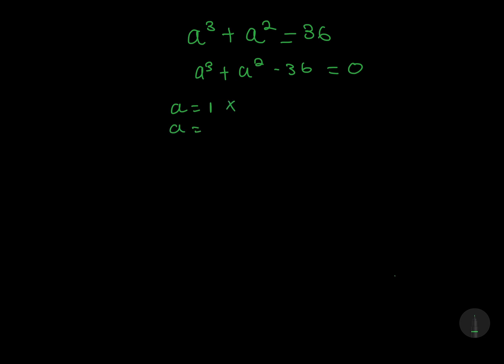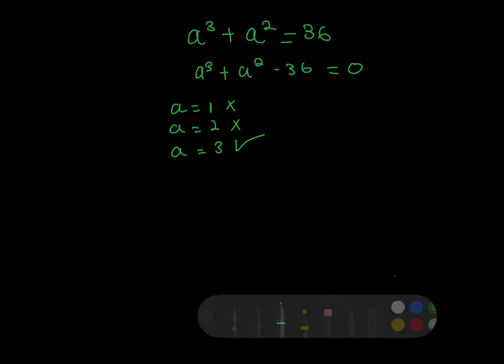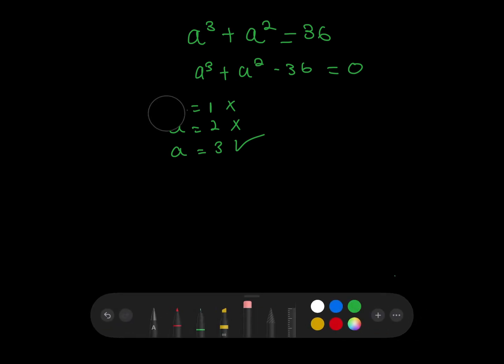If we test a equals 2, it will not get 0, which means this also fails. If we test 3, it will get 0, which means 3 is one of our roots. So, we have found one of our roots.